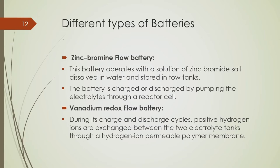Flow battery technology uses a liquid electrolyte flowing through a microporous membrane to generate electrical charge, similar to a fuel cell. This form of battery can store and release energy through reversible electrochemical reactions, and the advantage is the ability to scale the system independently in terms of power and energy. More cell stacks increase the power rating, while greater volume of electrolyte provides more run time. There are different types of flow batteries including zinc bromine and vanadium redox flow batteries.